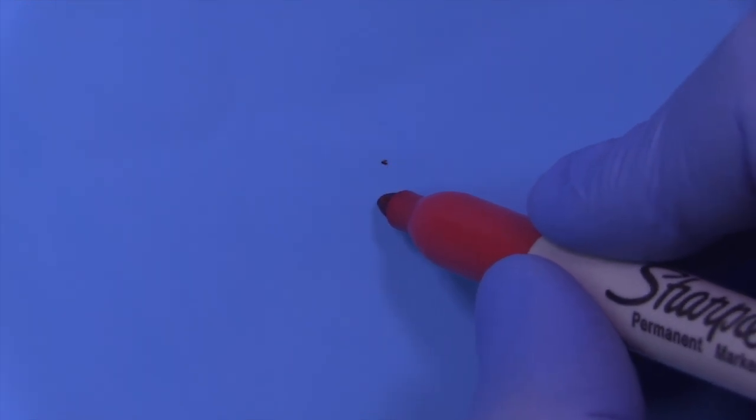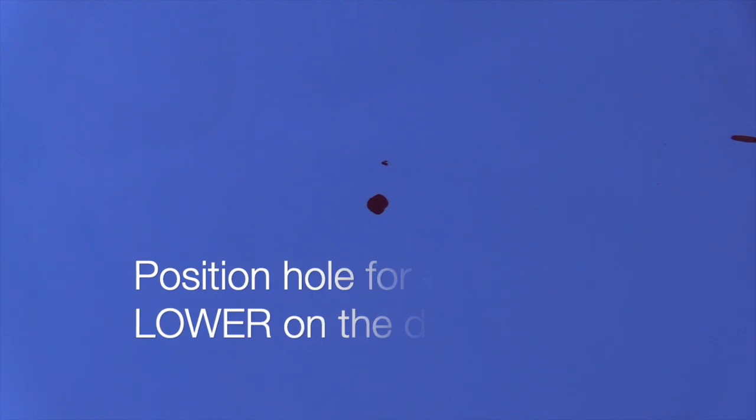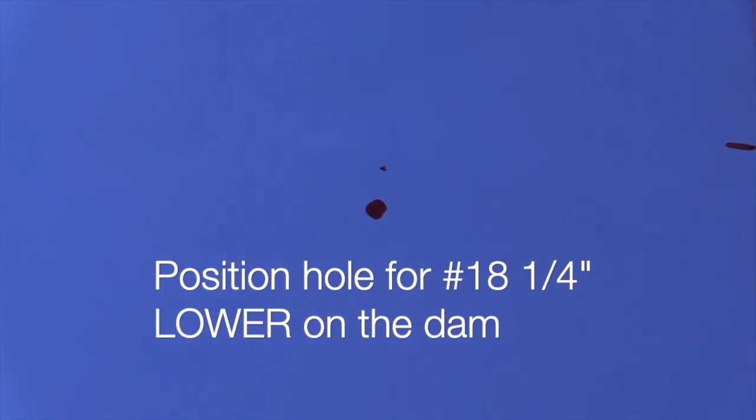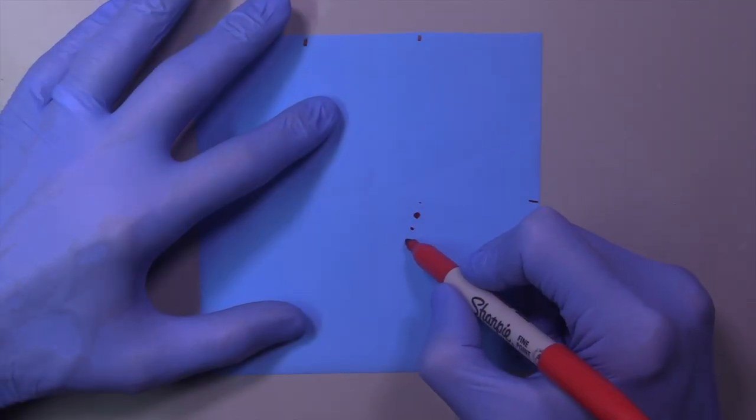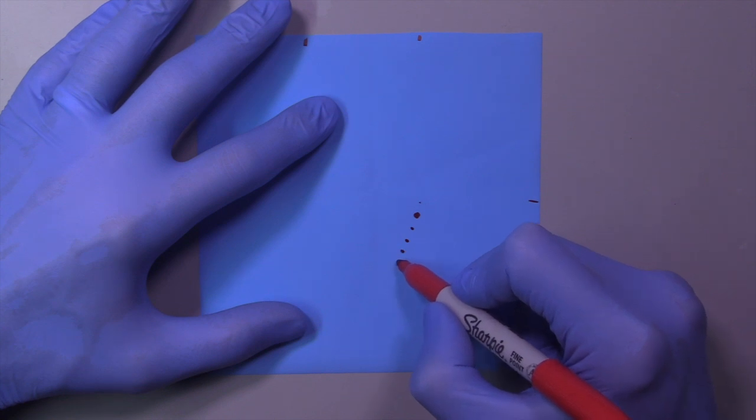So that's the hole for 19. But we're not going to isolate to 19 on this rubber dam. We're going to isolate all the way back to the second molar. So we're going to drop the hole about one quarter of an inch lower on the rubber dam. And a lot of people find this to be counterintuitive. But once you think about what's really happening, it makes a lot of sense.